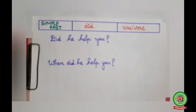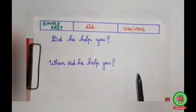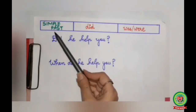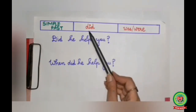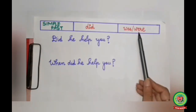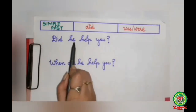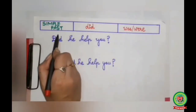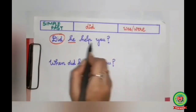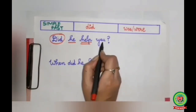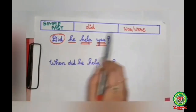Now we will discuss Rule 2. If your active voice is given in the past tense, then in the passive voice you have to add the helping verb 'was' or 'were'. This means that 'did' will change into 'was' or 'were'. The first example: 'Did he help you?' Here 'did' is your question word. 'He' is your subject — single underline. 'Help' is your verb — double underline. 'You' is your object — triple underline. 'Did' will change into 'was' or 'were'.